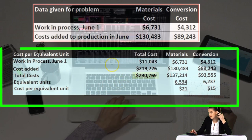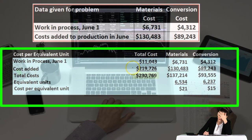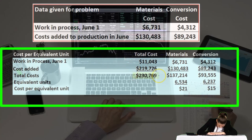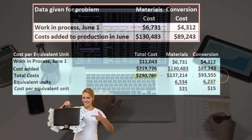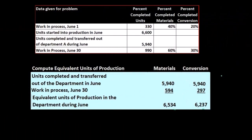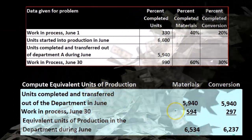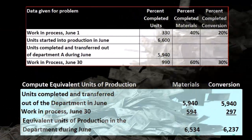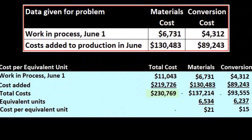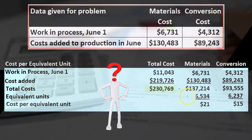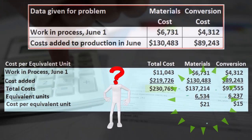We had the cost per equivalent unit, where we took the total dollar amounts — the work in process at the beginning dollar amount and the costs added — to get the total dollar amounts. We then need to take these amounts and apply them to the units completed and transferred out and the units still in work in process. We divided out the total equivalent units to arrive at those costs.